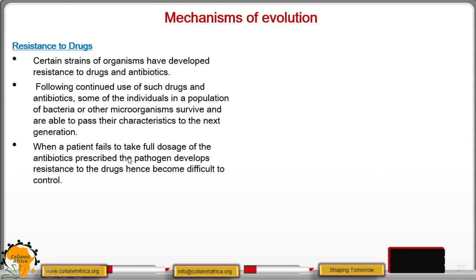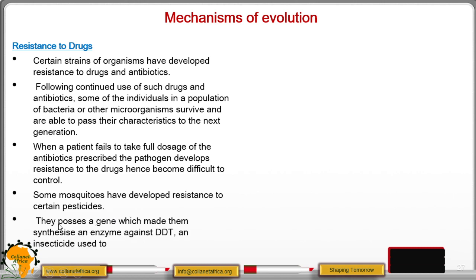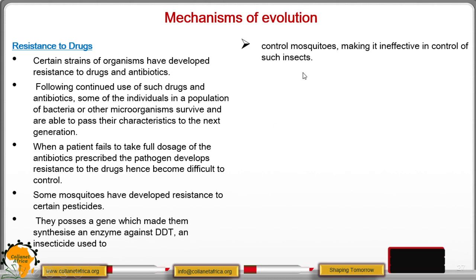When a patient fails to take a full dosage of antibiotics prescribed by the doctor, the pathogens develop resistance to the drugs, hence becoming difficult to control. Some mosquitoes have also developed resistance to certain pesticides because they possess a gene which enables them to synthesize an enzyme against DDT, an insecticide used to control mosquitoes.